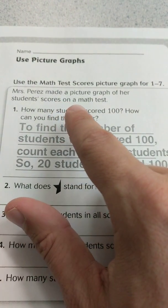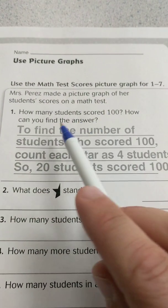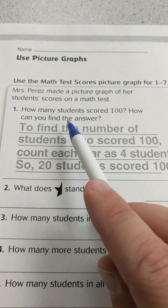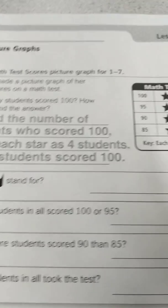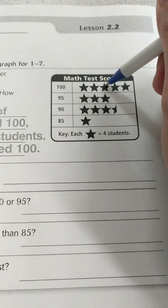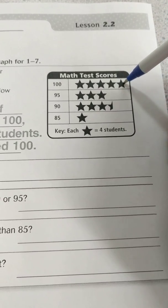Mrs. Perez made a picture graph on her students' scores on a math test. How many students scored 100? How can you find the answer? Well, I just showed you, let me just count by 4 is 4, plus 4 is 8, plus 4 more would be 12, plus 4 more would be 16, plus 4 more would be 20.